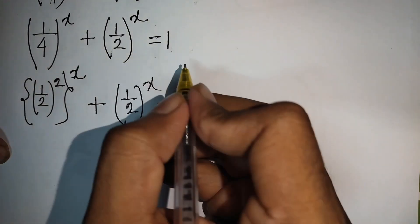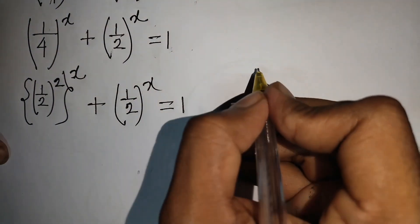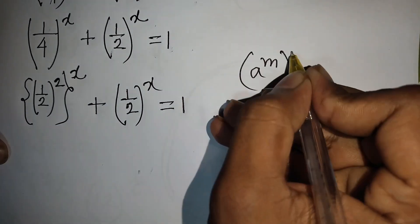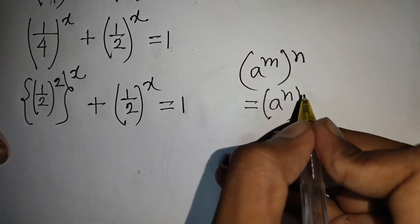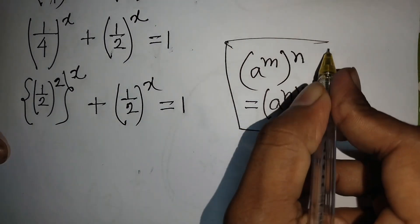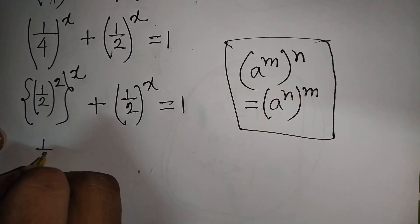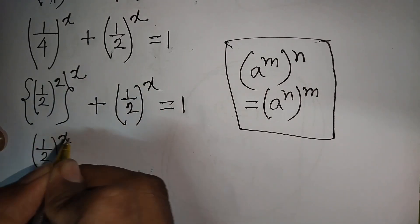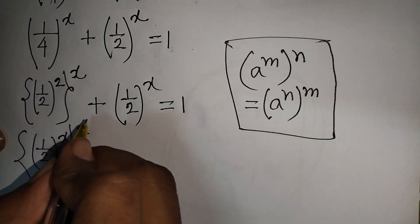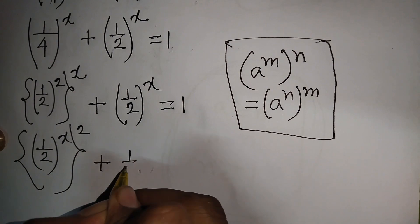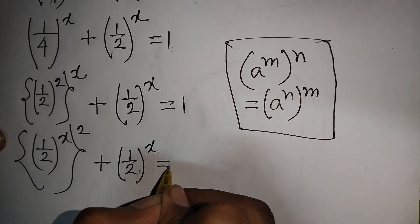Here we apply the exponential rule: (a^m)^n = (a^n)^m. So ((1/2)^2)^x becomes ((1/2)^x)^2. Our equation is now ((1/2)^x)^2 + (1/2)^x = 1.